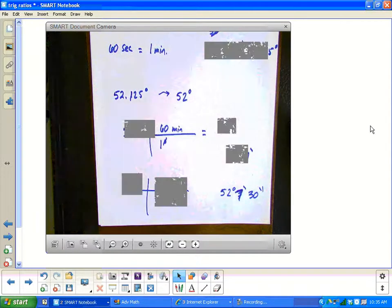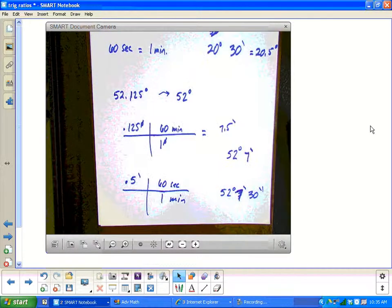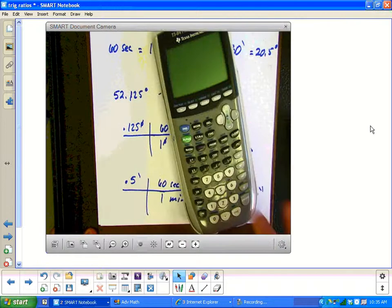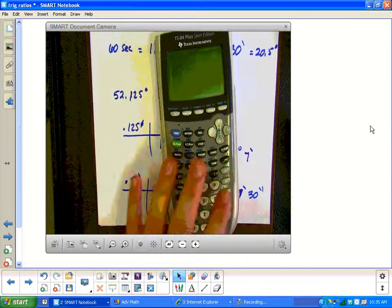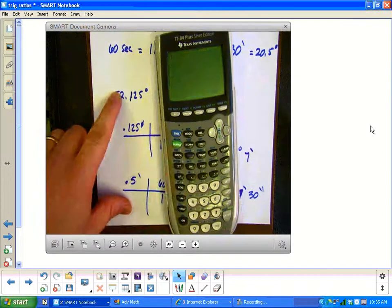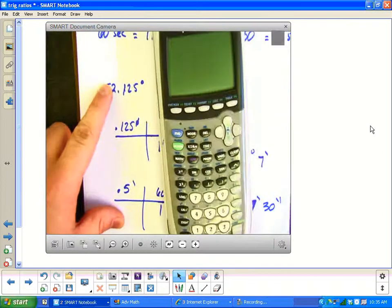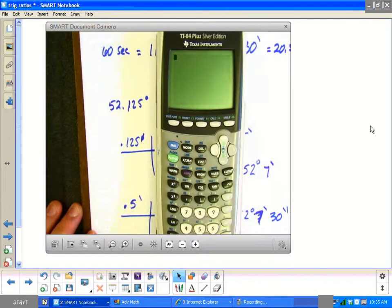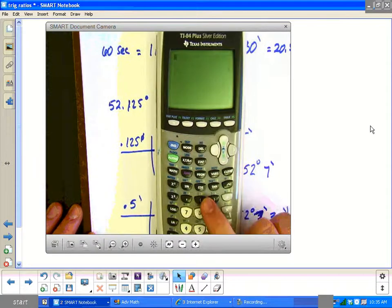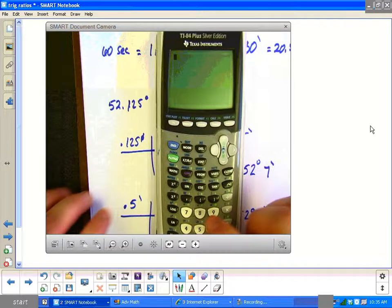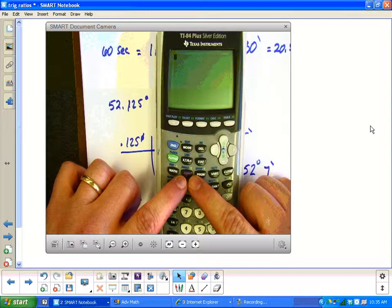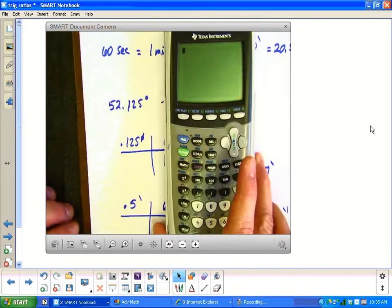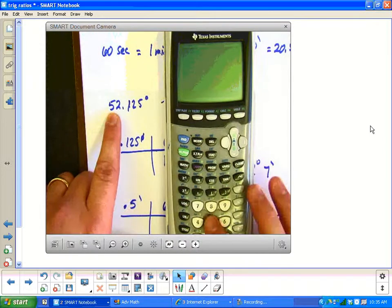Now, the bottom line is this. It's all in the calculator. You don't have to do dimensional analysis because you can do it on your calculator. So let me show you where it's at on your calculator. On your calculator, you have an angle menu. You'll see above your apps button, you have the word angle.